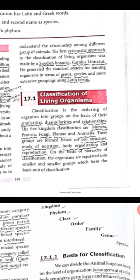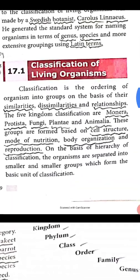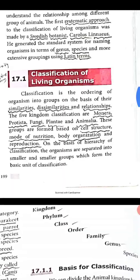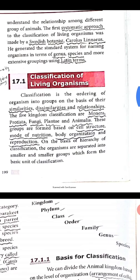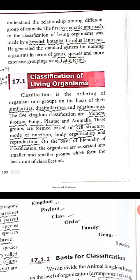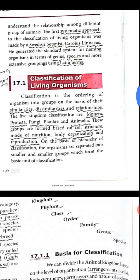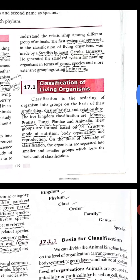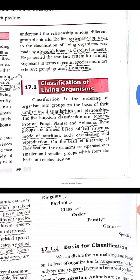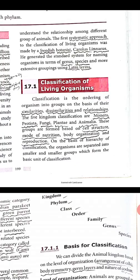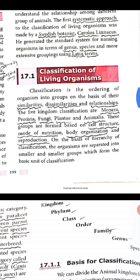Classification of living organisms. Classification is the ordering of organisms into groups on the basis of their similarities, dissimilarities, and relationships. The first five-kingdom classification includes: Monera, Protista, Fungi, Plantae, and Animalia.